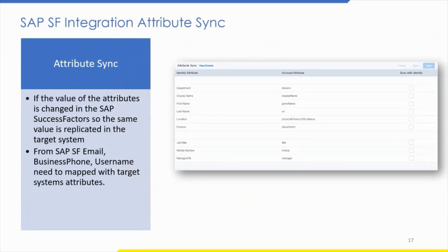In SAP SF integration attribute sync, this is basically for the mover scenario. If the value of an attribute is changed in SAP SuccessFactors, the same value will be replicated to the target system. In the UI, the first column shows the identity attributes from SAP SF, and the second column shows the account attributes from the target system. If we click 'sync with identity', any attribute whose value changes in SAP SuccessFactors will be replicated in the target system.